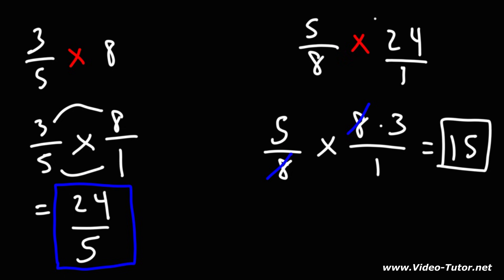So whenever you have examples like that, sometimes you can, if you see a common factor, in this case 8, you can cancel it and make the problem a lot easier. So that's something you want to keep in mind.